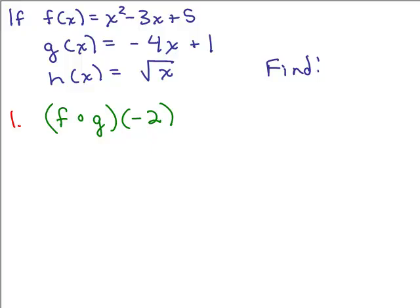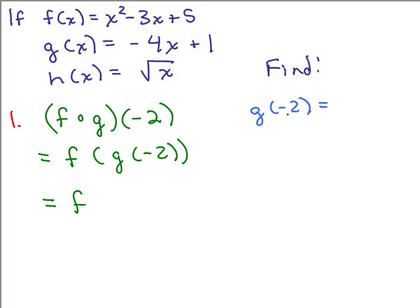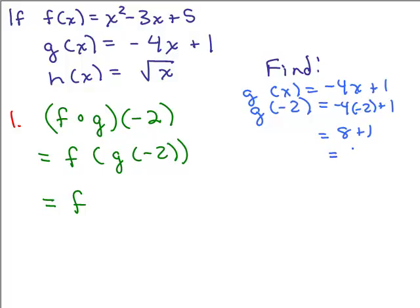So the first thing we need to do is write down what that means: f of g of negative 2. I need to figure out what g of negative 2 is. I can go over on the side to figure out what g of negative 2 is by plugging in negative 2 into the function for g. Remember g of x was negative 4x plus 1, so g of negative 2 is negative 4 times negative 2 plus 1. That gives you 8 plus 1, or 9.